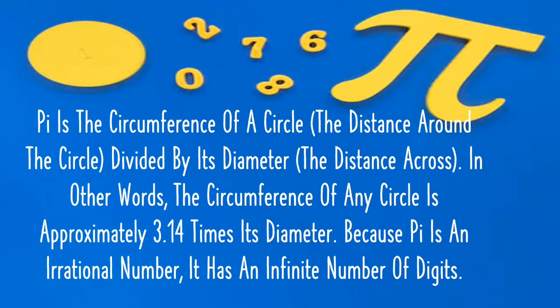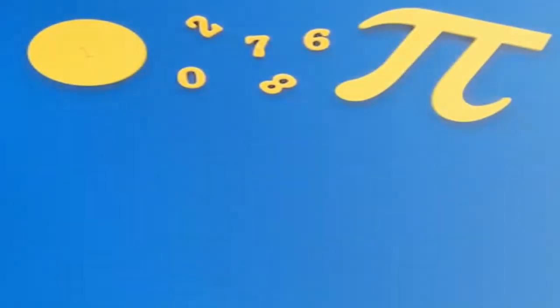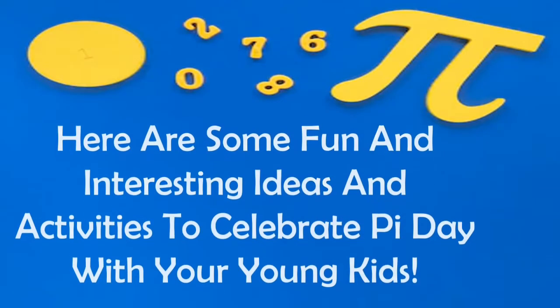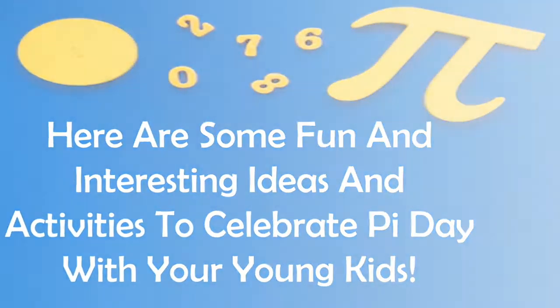Pi is the circumference of a circle divided by its diameter. In other words, the circumference of any circle is approximately 3.14 times its diameter. Because Pi is an irrational number, it has an infinite number of digits. Here are some fun and interesting ideas and activities to celebrate Pi Day with your young kids.